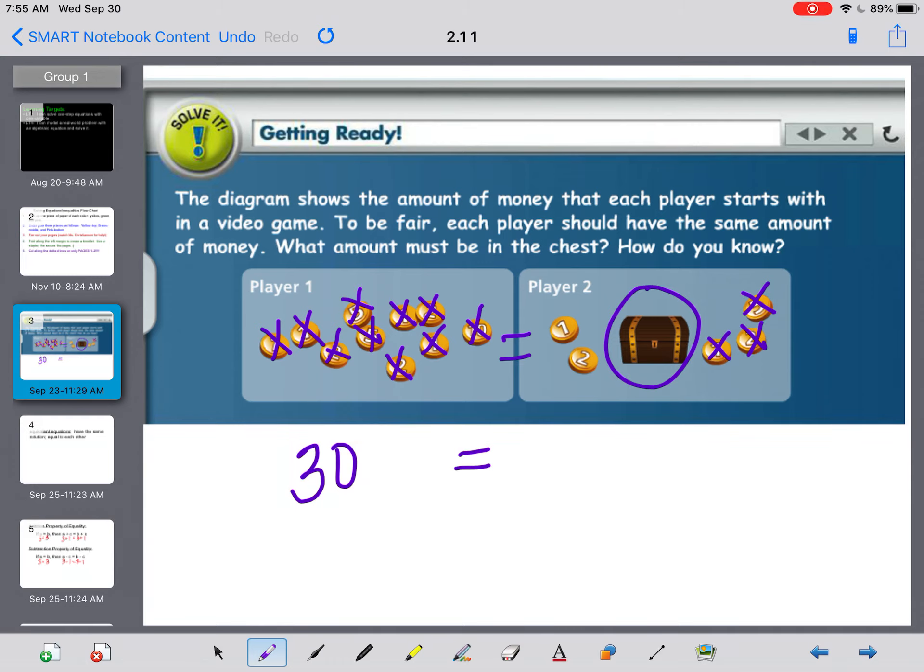Over here, player 2 has 5, 7, 8, 9, 10, 11, plus they have this treasure chest. I don't know how much is in the treasure chest, so I'm going to put that as an X.